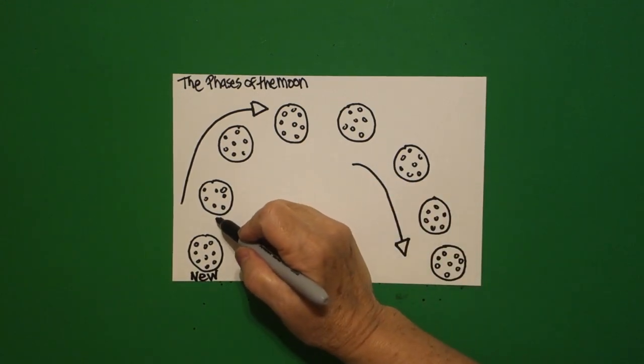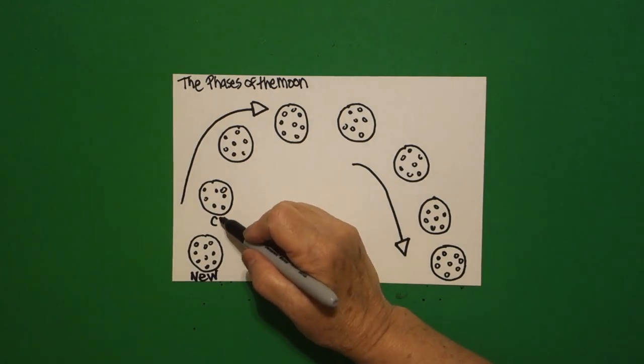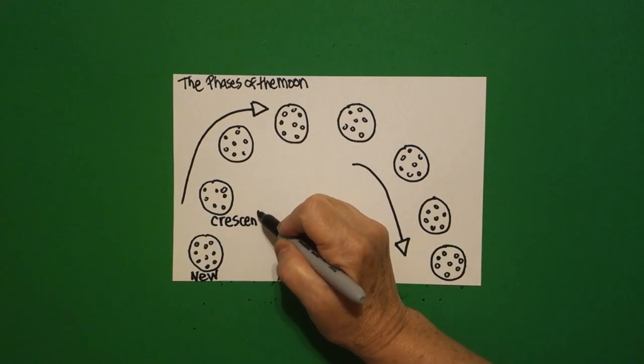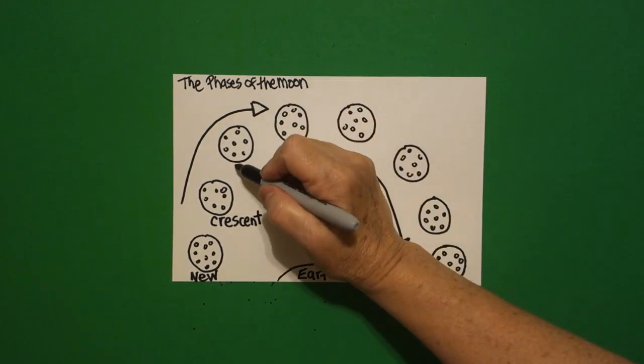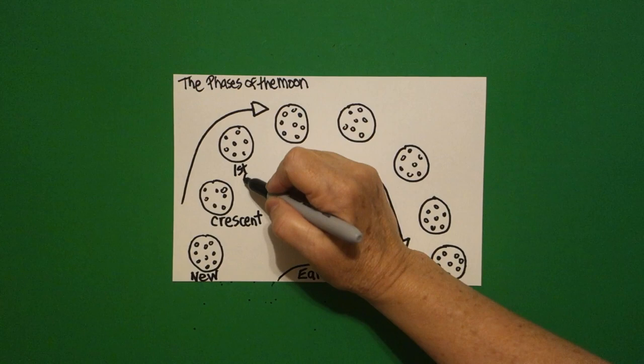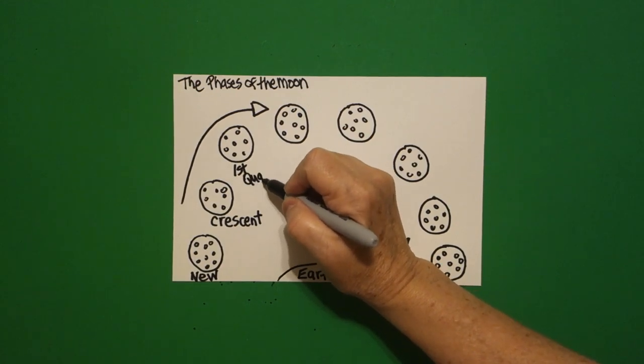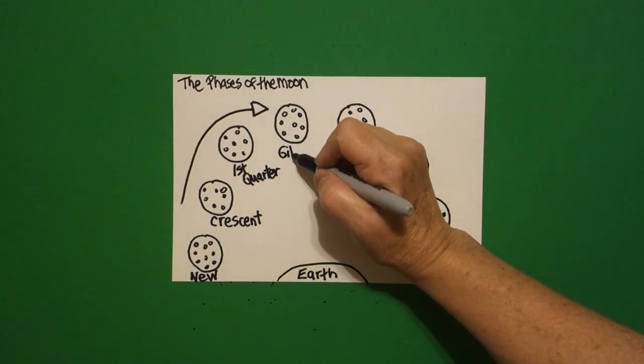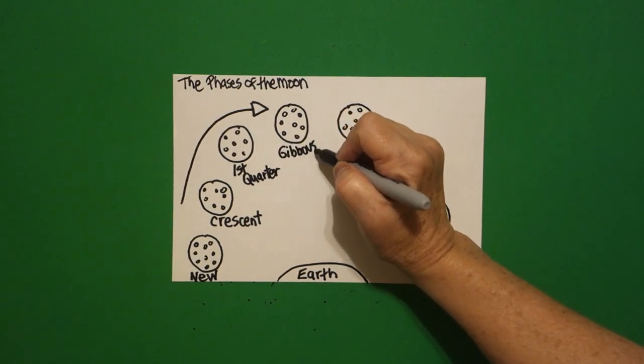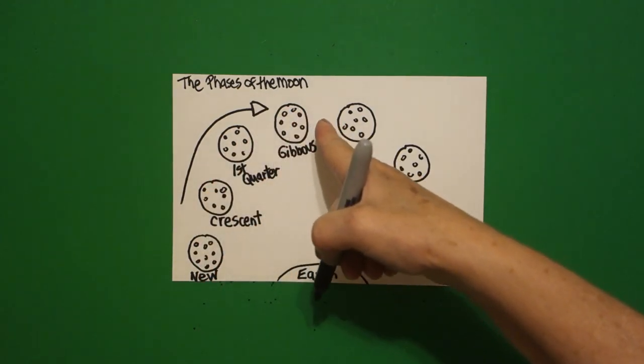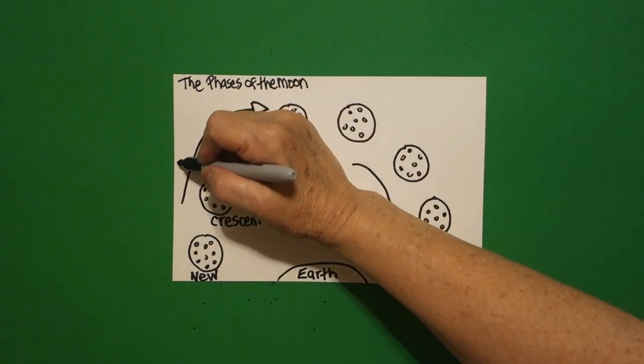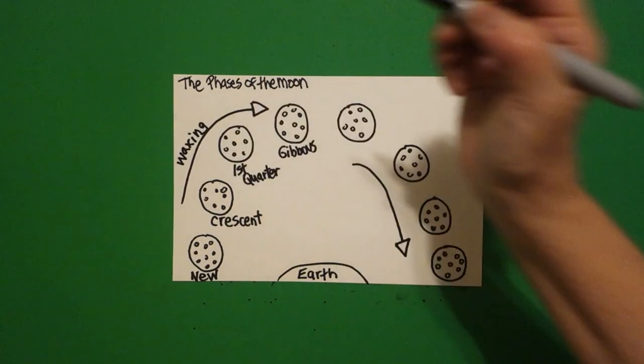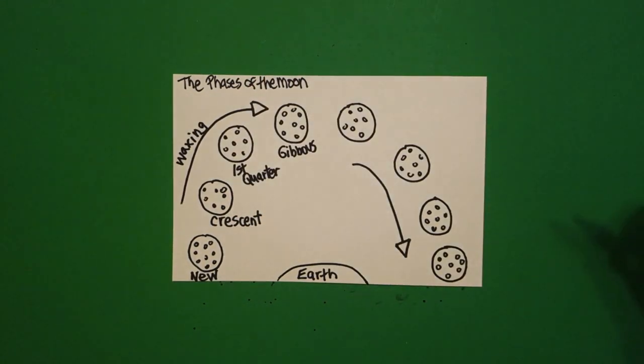We come up and we label this the crescent moon. We come up and we do the first quarter. We come up again, and this is the gibbous. Now, when we are going from the new moon going up, that is the waxing moon. You're getting to see more and more of the actual moon.